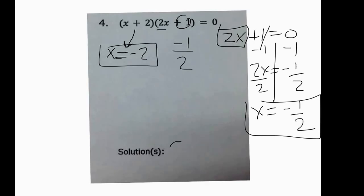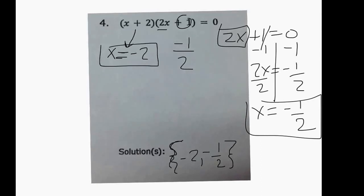So the solutions are, if we write them in brackets like they do on the star test sometimes, it's -2, -1/2.